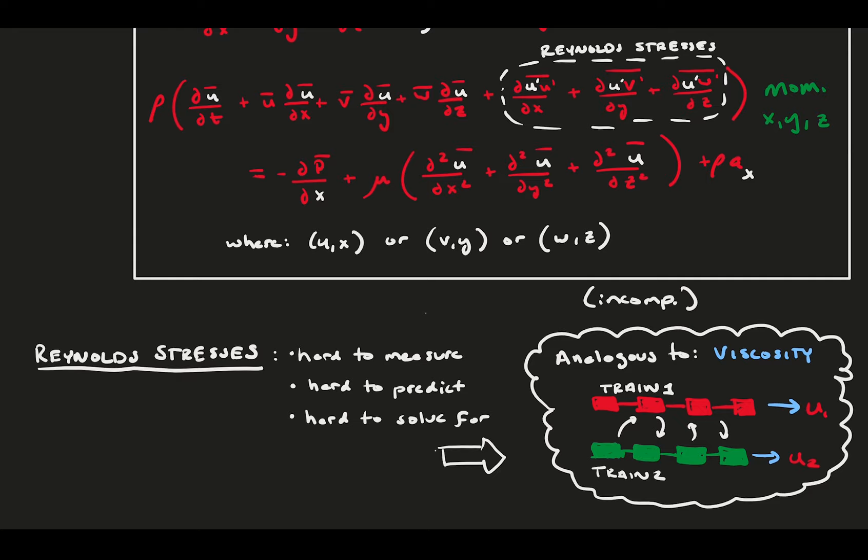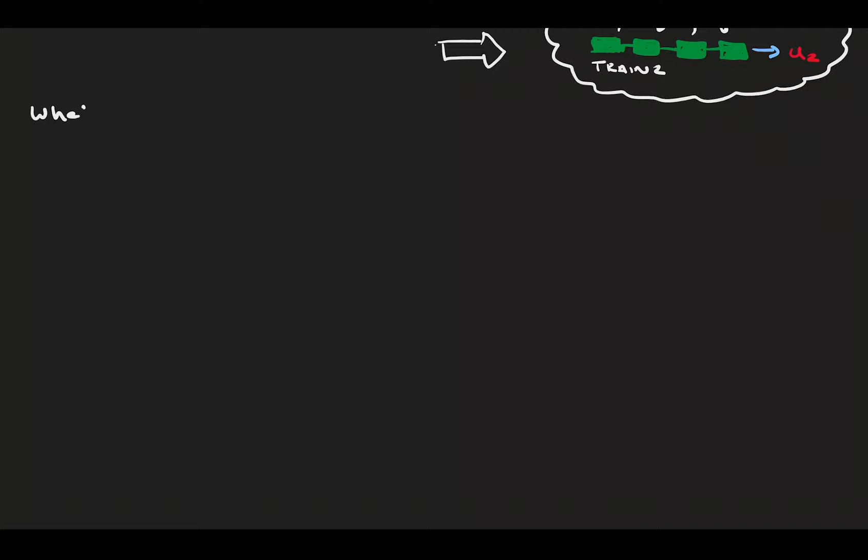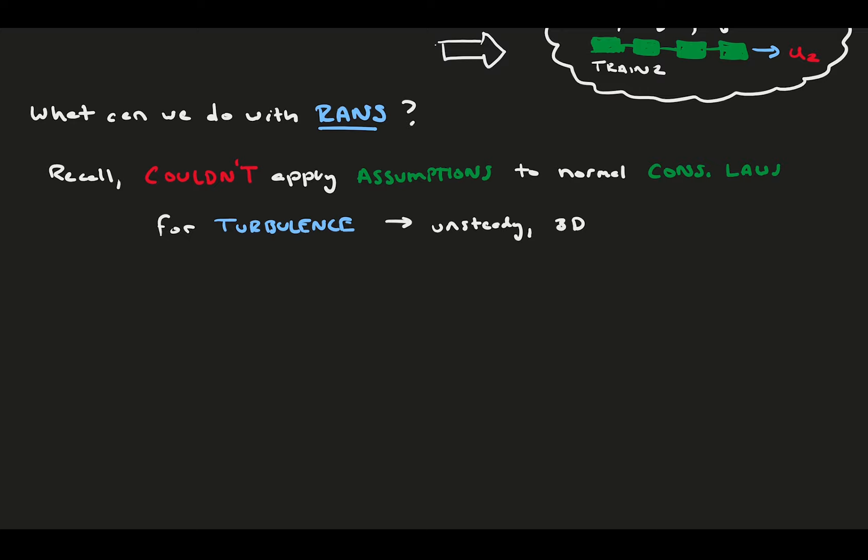So now that we have the RANS equations, and we understand where they come from, what do we do with them? How do we use them to analyze turbulence flow? If you recall in the previous video, in turbulent flow, we couldn't make any assumptions of the instantaneous flow field. Things were unsteady and 3D, leaving the Navier-Stokes equations quite a mess. However, we can certainly make assumptions about the time average flow field represented by the RANS equations. This is because some turbulent flows are actually steady and 2D on average. Let's try it out.